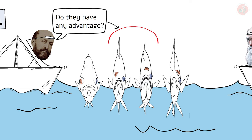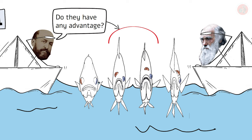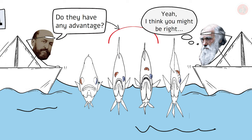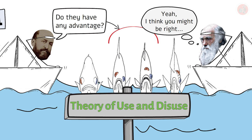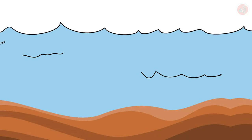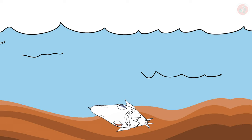Darwin himself, in the sixth edition of On the Origin of Species, regrettably made a misstep by attempting to explain the evolution of the flounder's eye with Lamarck's theory of use and disuse. He proposed that some ancestors of the flounder might have sunk to the seafloor to escape predators.